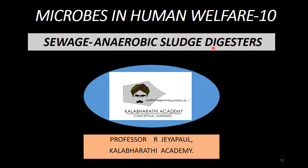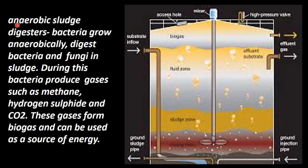This is the next biological treatment that we will go over. The anaerobic sludge digester is a container. In this method, anaerobic bacteria grow and digest the bacteria and fungi in the sludge. This is an agitator, which digests the bacteria and fungi in the sludge.